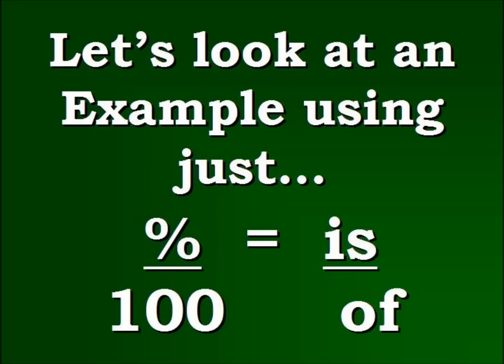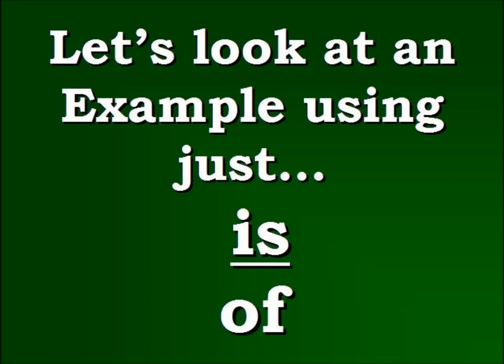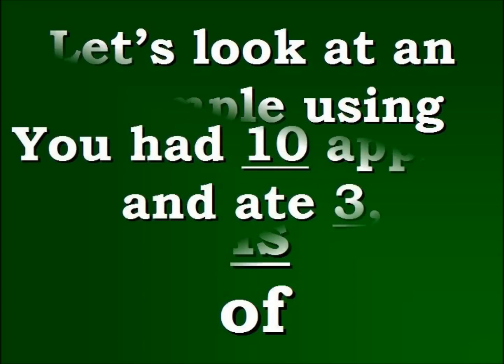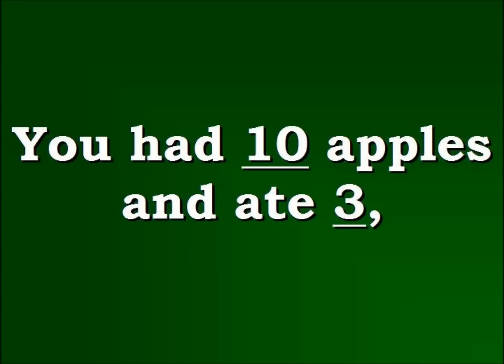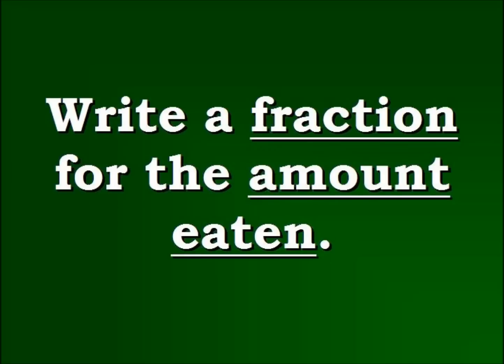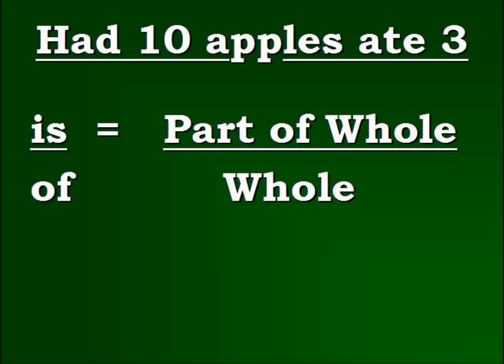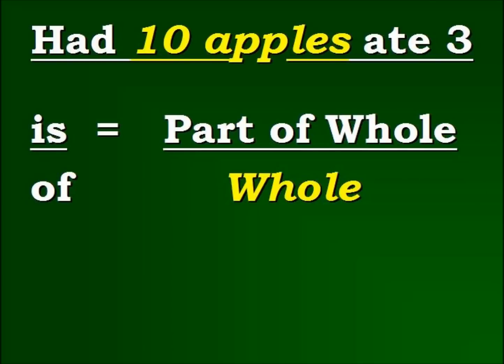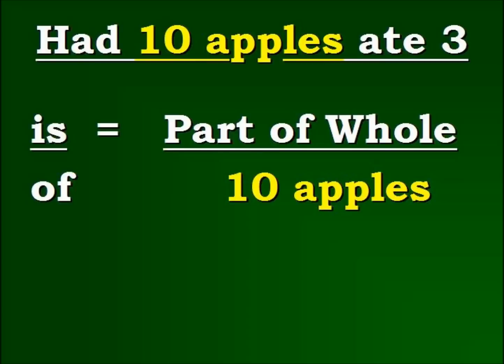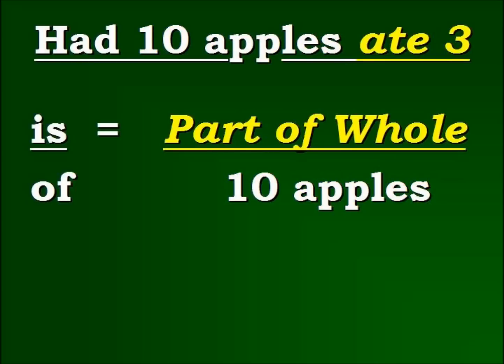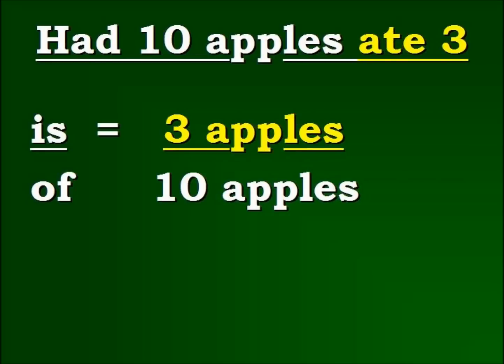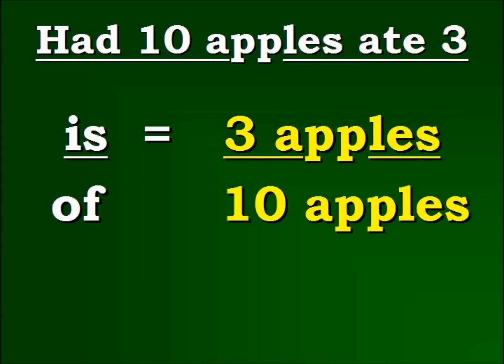Let's look at an example to give you a better understanding. We're going to start with the is over of because the percent over 100 is very easy to understand. If you had 10 apples and ate 3, let's write a fraction for the amount eaten. So you have the is over of which we understand as being the numerator and the denominator or the part of the whole and the whole. So the 10 apples are the whole part, you plug that in. And the part of the whole are the 3 that you ate. So here's our completed solution, 3 apples over 10.